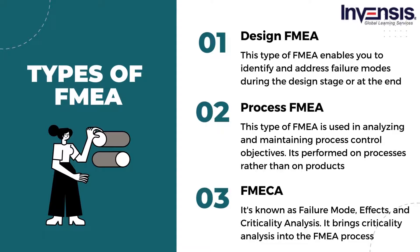The third type is FMECA, known as failure mode, effects, and criticality analysis. It brings criticality analysis into the FMEA process. Other well-known types of FMEA include functional FMEA, software FMEA, manufacturing FMEA, service FMEA, and others.